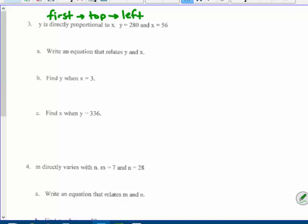Y is directly proportional to x. Y equals 280 and x equals 56. Write an equation that relates y and x. So I'm going to first divide y over x to get my constant. And that's 280 over 56 which equals five.